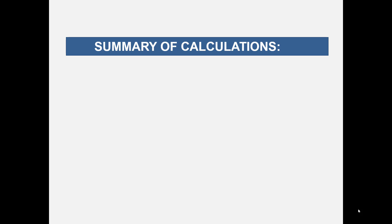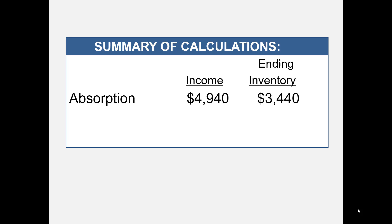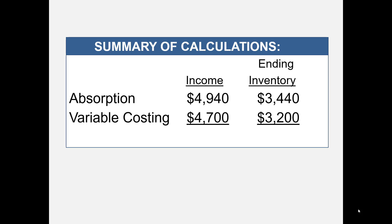You may have noticed that we calculated different numbers under the two methods for income and the value of ending inventory. To summarize: under absorption costing, income was $4,940 and ending inventory was $3,440. Under variable costing, income was $4,700 and ending inventory was $3,200. The difference on the income statement and the difference on the balance sheet are both $240. Can we explain why these numbers differ by $240?